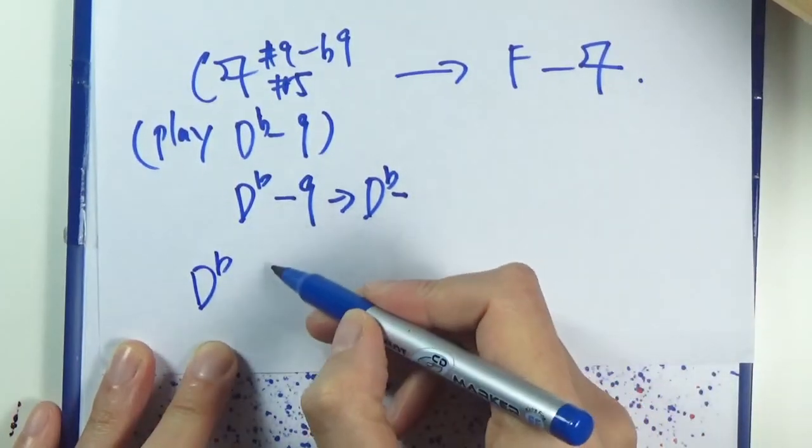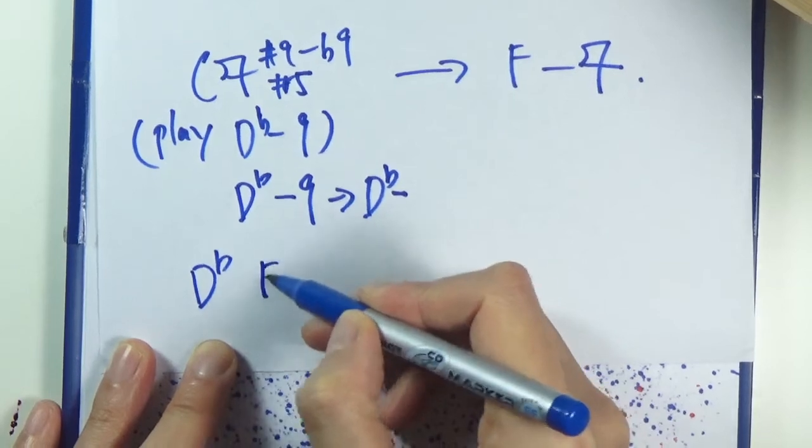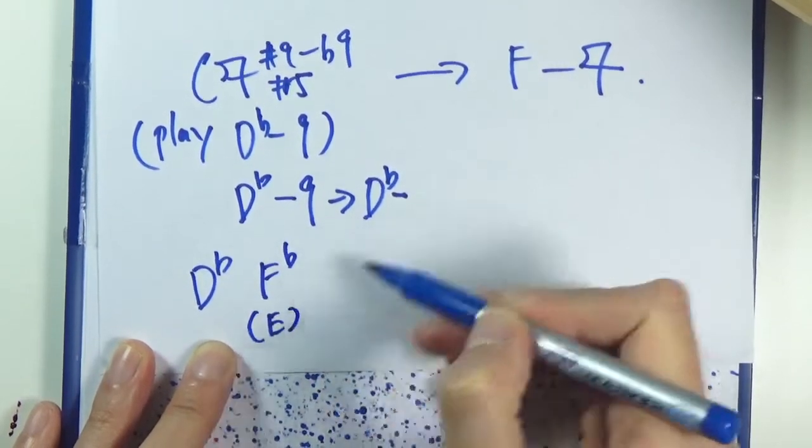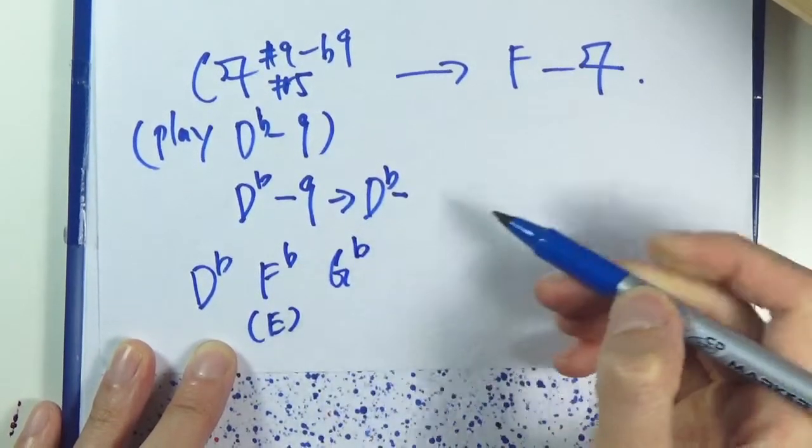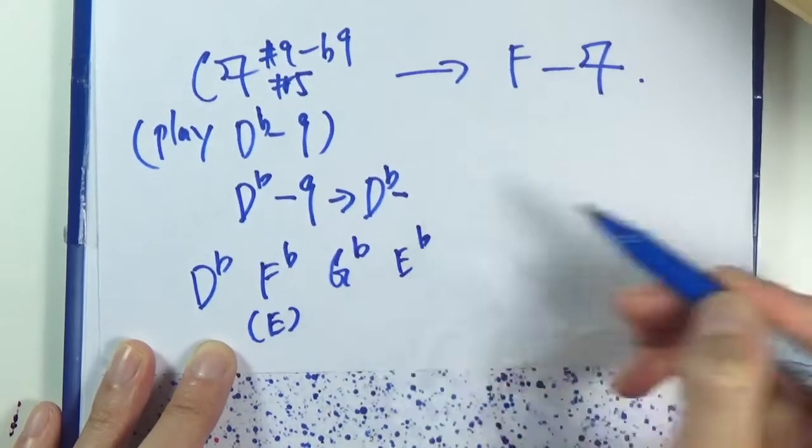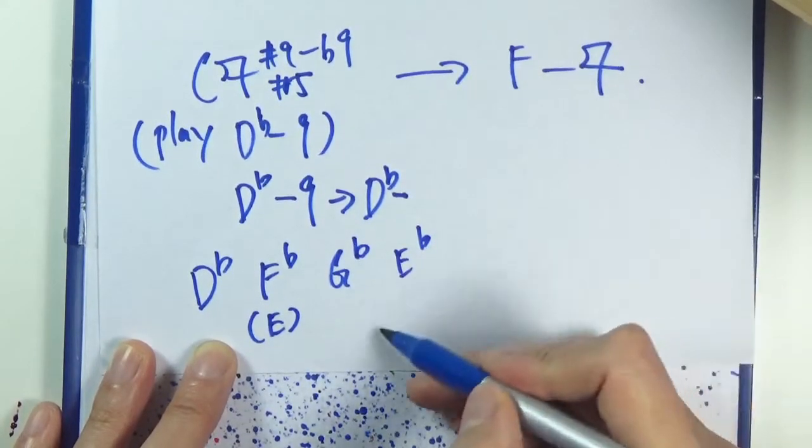If I translate everything with respect to C now, you are effectively playing... so D-flat is really just flat nine. And then C again.